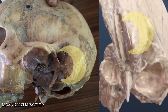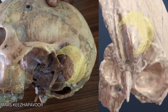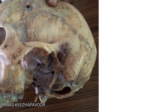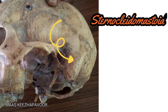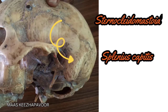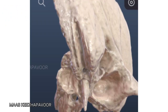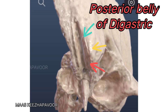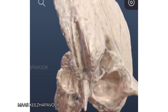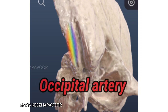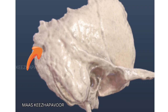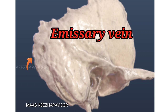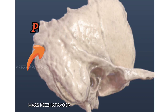The mastoid process is a conical projection that appears at the age of one and completes its growth by puberty. The lateral surface gives insertion to the sternocleidomastoid, splenius capitis, and longissimus capitis. In the medial aspect of the mastoid process, a deep notch called the mastoid notch gives origin to the posterior belly of the digastric. Further medial to the notch, a shallow groove lodges the occipital artery. Close to the posterior border of the mastoid part, the mastoid emissary foramen is present, through which an emissary vein passes communicating the sigmoid sinus with the posterior auricular vein.